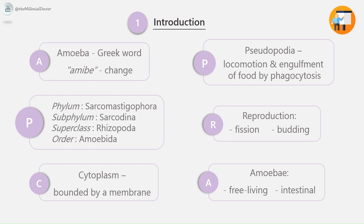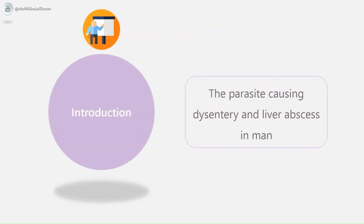Amoebae are classified as either free-living or intestinal amoebae. A few free-living amoebae occasionally act as human pathogens, producing meningoencephalitis and other infections — for example, Naegleria and Acanthamoeba. The parasitic amoebae inhabit the alimentary canal. Entamoeba histolytica belongs to the intestinal amoebae.